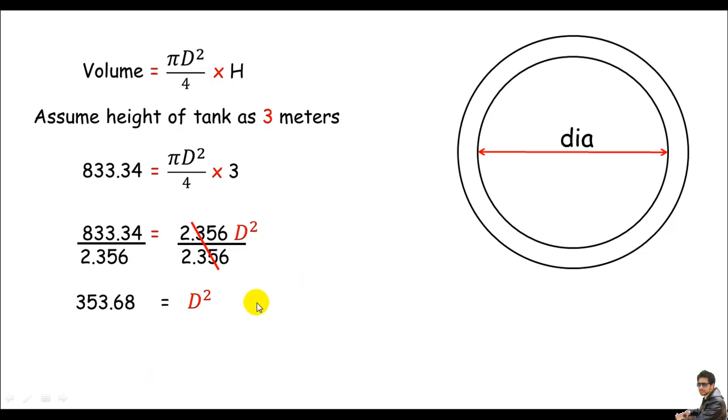Remember, we only need D, which is the diameter of sedimentation tank, so we just need to put square roots on both sides. We can get of course D equals 18.8 meter. Let me just assume or say the diameter is 19 meter.